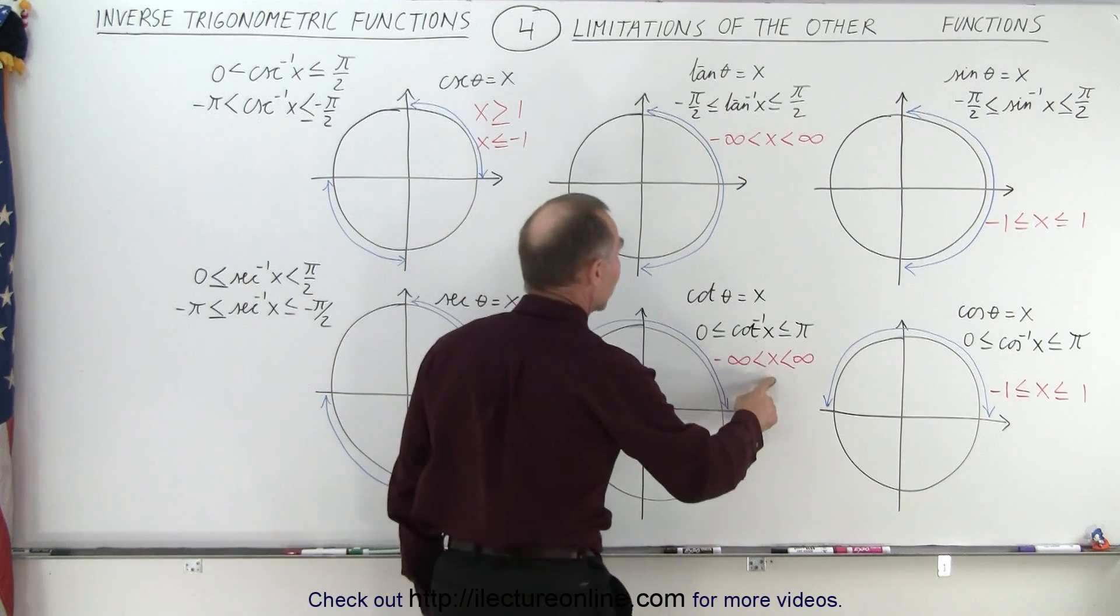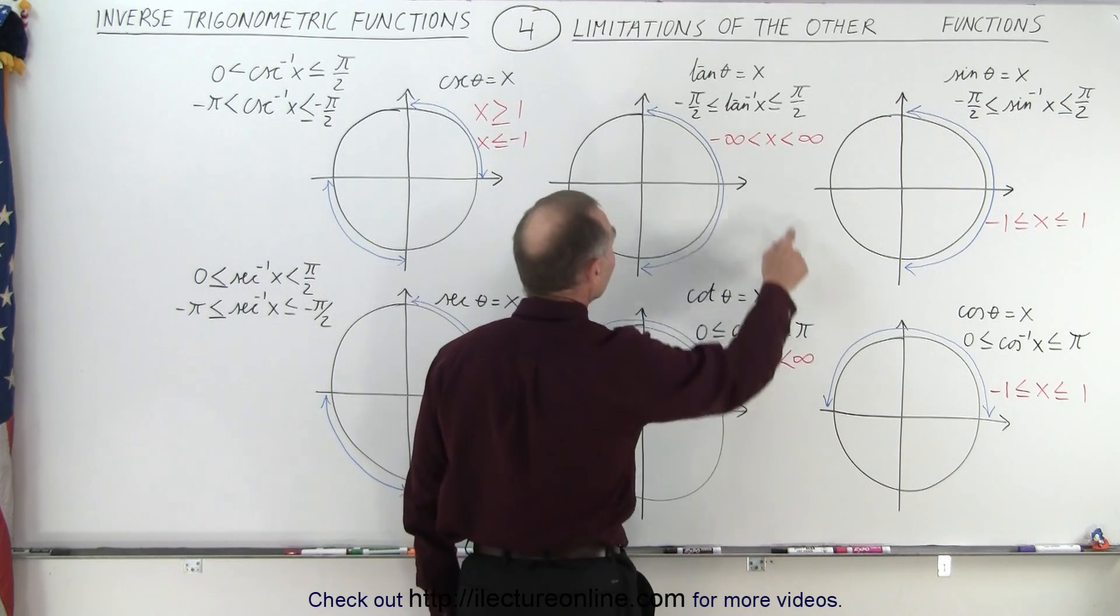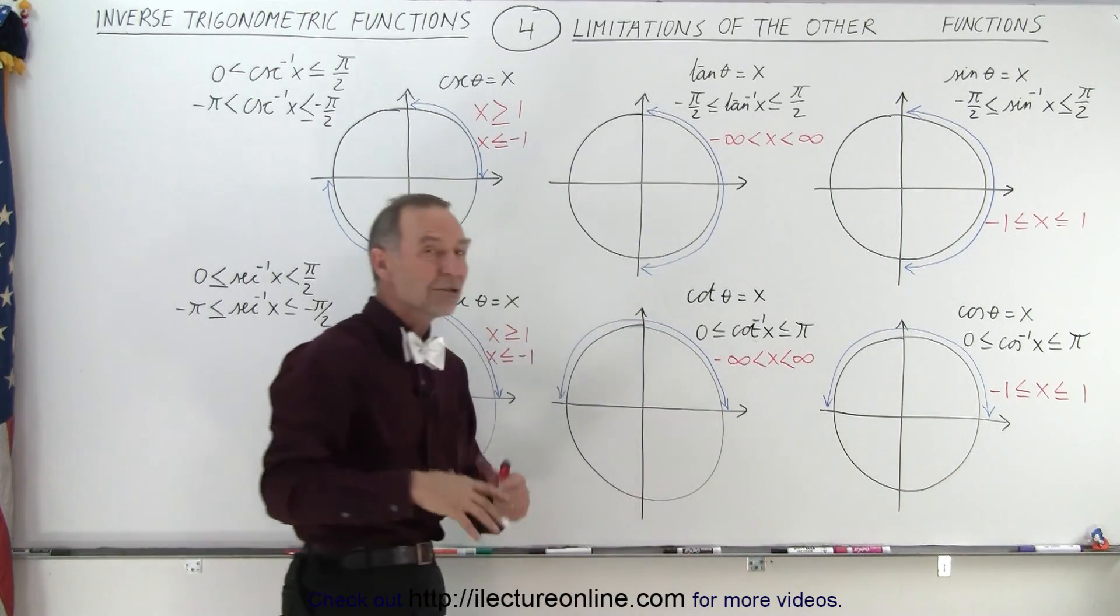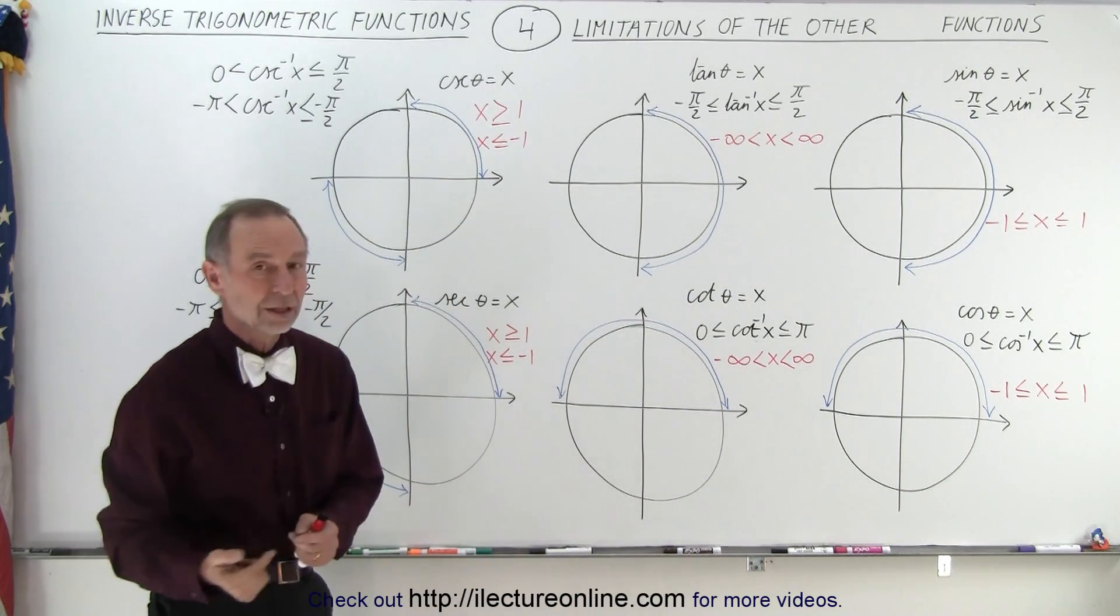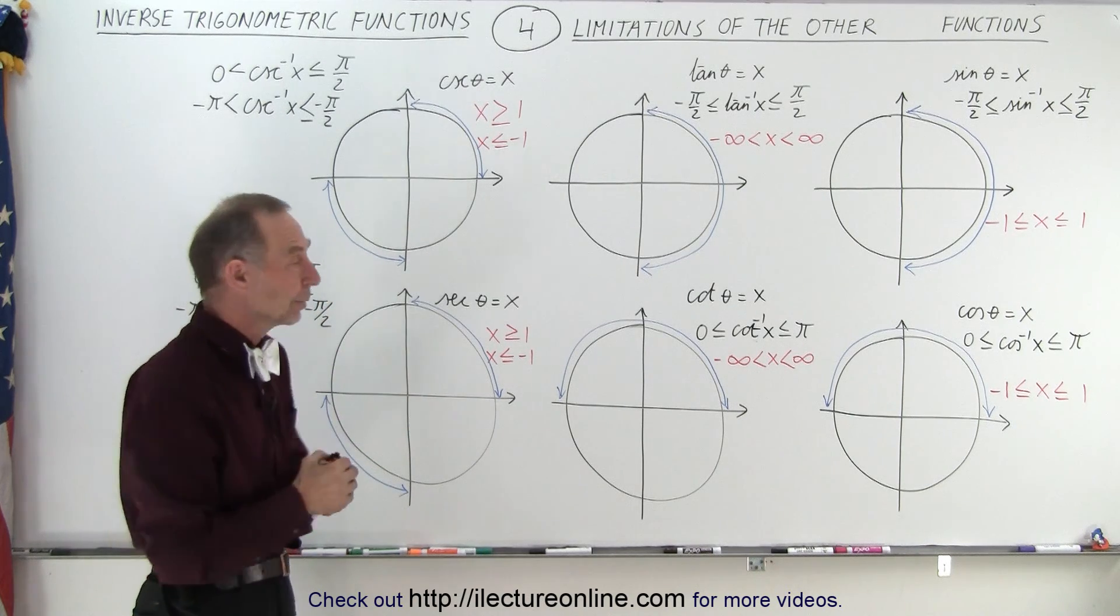Notice that the values for x can be anywhere from minus infinity to infinity, not including, of course, infinity. And the same for the tangent, negative infinity to infinity. So any number you can pick, plug it into the inverse cotangent or plug it into the inverse tangent and you'll get an associated angle with that.